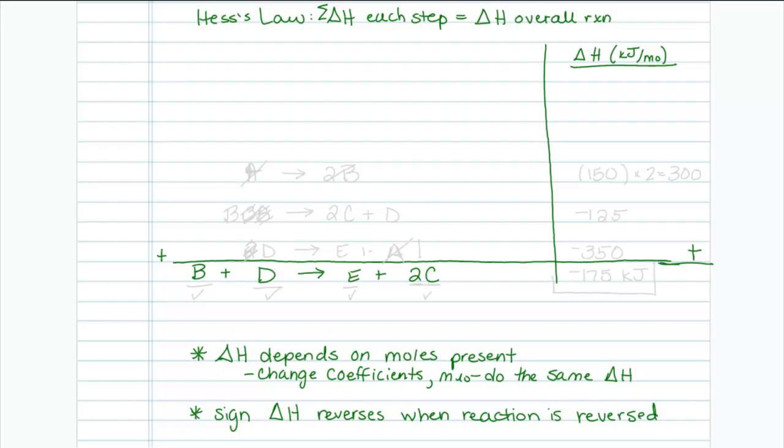So when attacking a Hess's Law problem, let's think things through a little bit. I know I want everything to add up to B plus D yields E plus 2C. So I look through the processes that I have. I'm going to start at the left hand side, a process that contains B. Well, I see two of them that contain B. I really don't know which one to use right now so I'm going to skip that. Let's look at D and E. D also has two possibilities and I don't know which one so I'm going to move on to E. There's only one process that contains E and that's the last one: E plus A yields 2D.